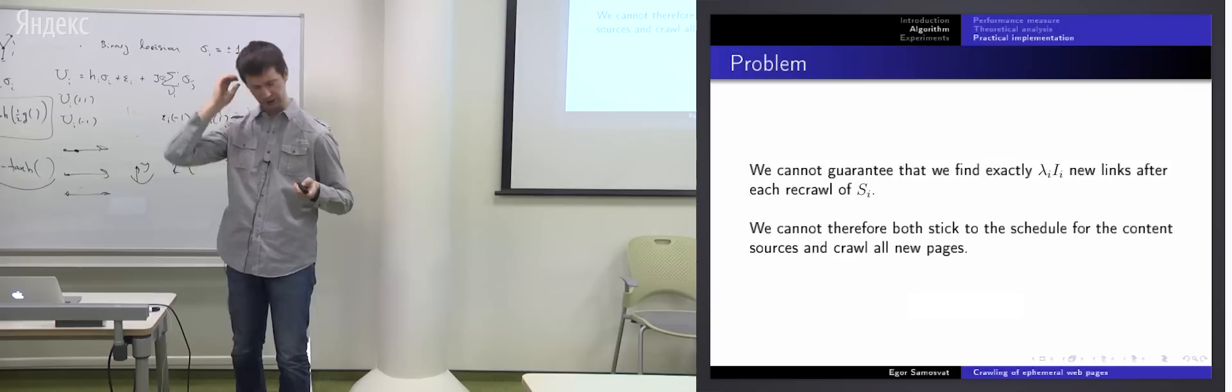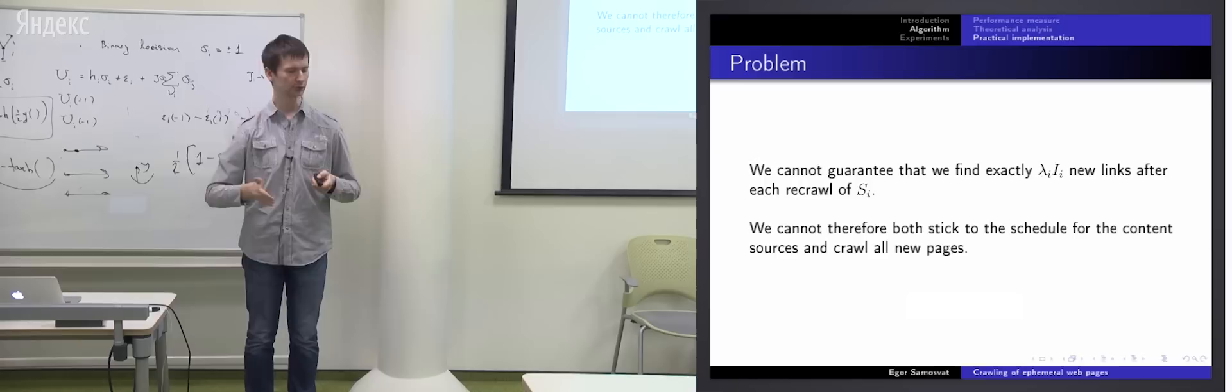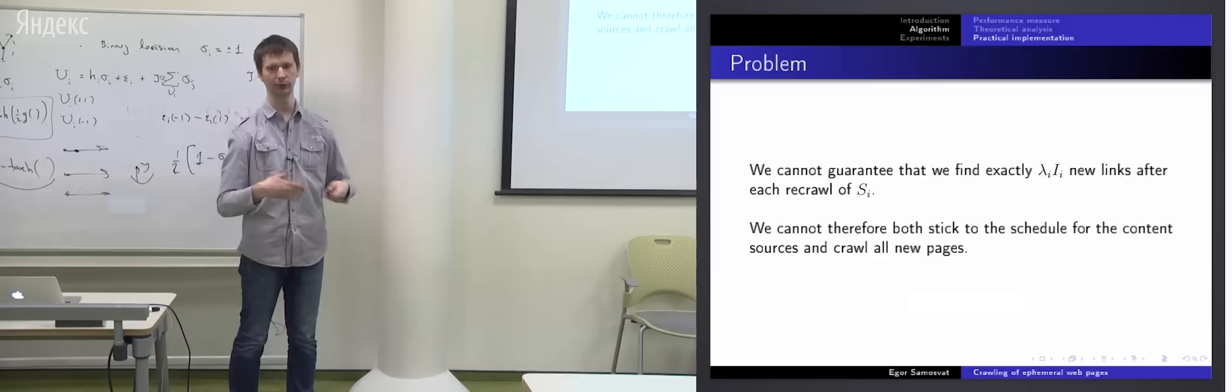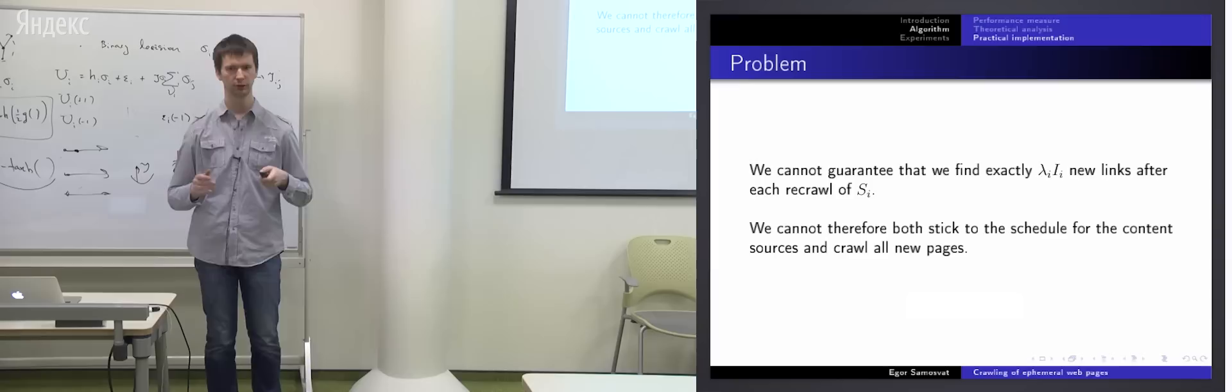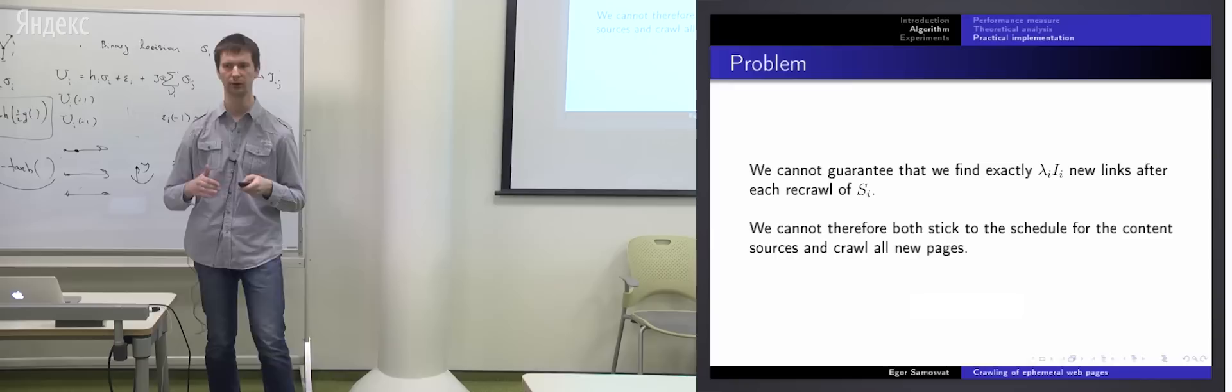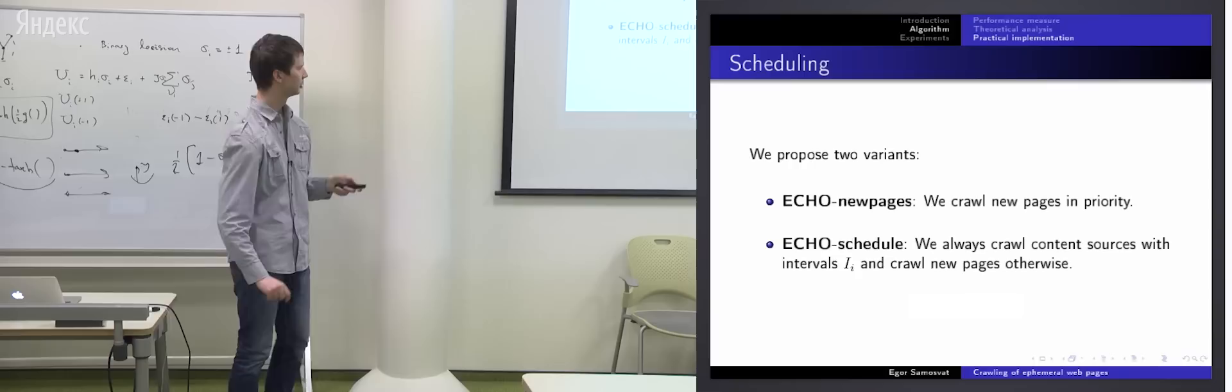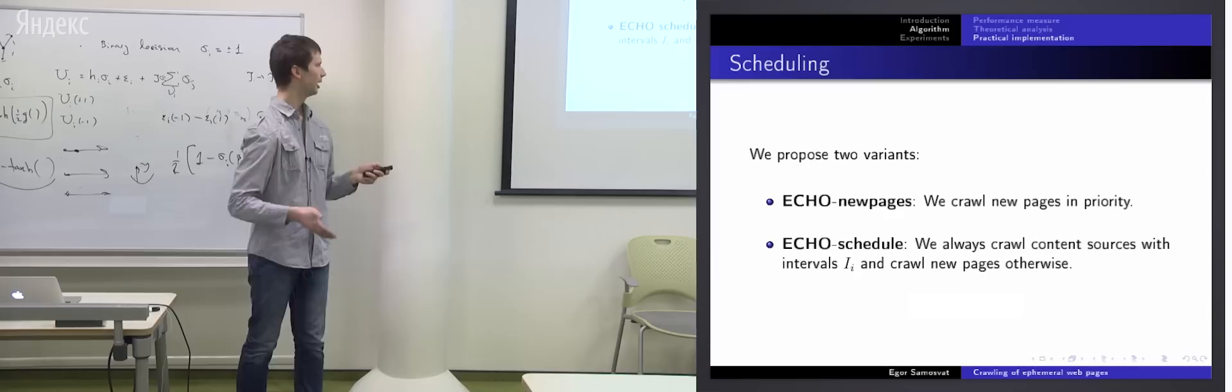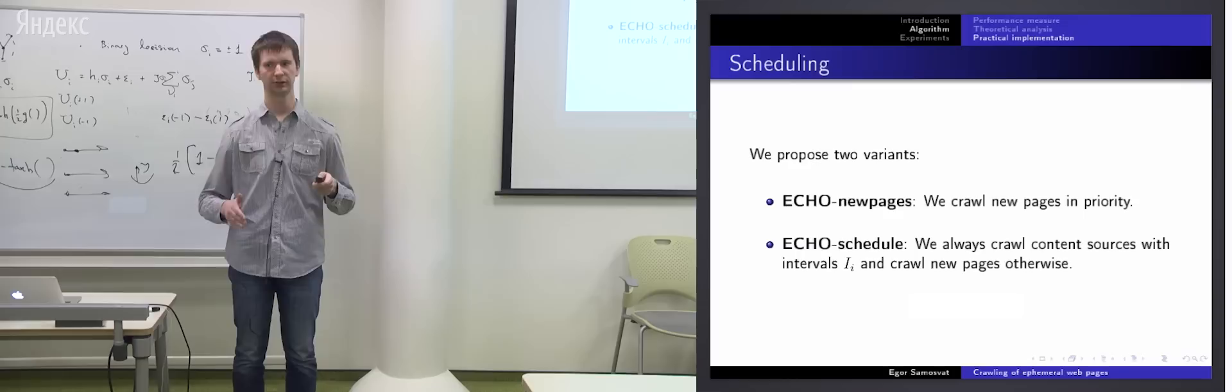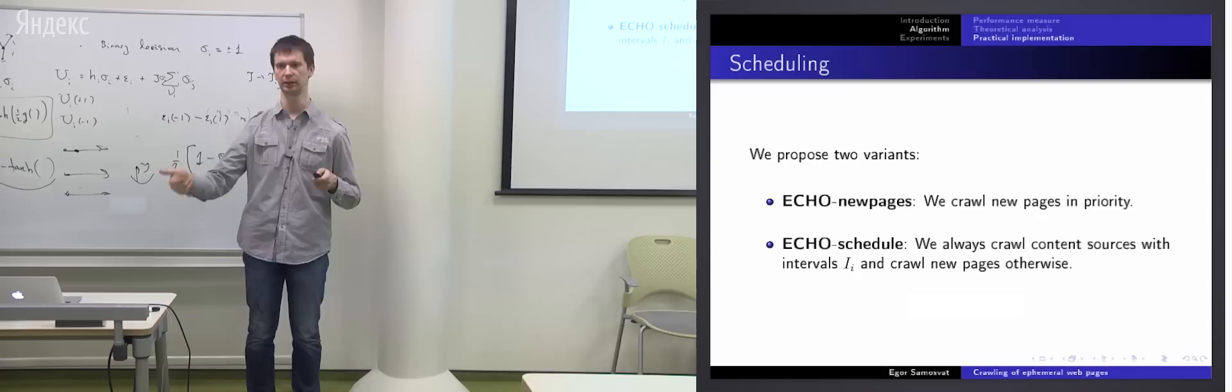Okay, the one problem is that we actually cannot guarantee that our model is really true. Because when we actually read the page, we won't find exactly lambda sub i, i sub i new links. We can find less or big amount of links. So if we find a big amount of links, we cannot both stick to the schedule and crawl all new pages found. That's why we need to decay from our optimal solution. And we propose two variants. One is echo new pages. When we first crawl all new pages and then we decay from the schedule and we crawl a content source which decays from schedule mostly. And other variant says that schedule is the most important thing. Then we always stick to the schedule and maybe we crawl new pages only if we have time. So in this case, we will crawl some new pages with big delay.